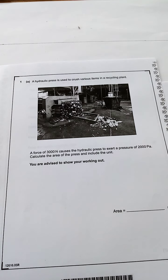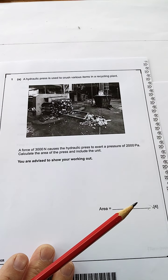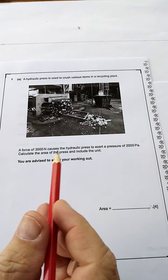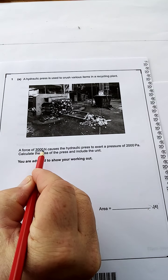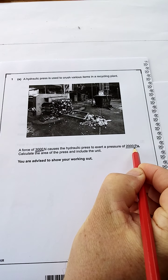The hydraulic pressure is used to crush various elements in a recycling plant. A force of 3000 newtons causes the hydraulic pressure to exert a pressure of 2000 pascals. Calculate the area of the press and include the unit. There's four marks here. So let's see what we've got. We've got a force in newtons. We've got a pressure in pascals. That's grand.